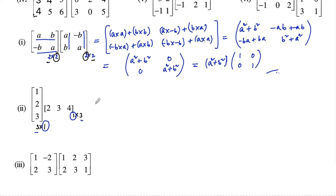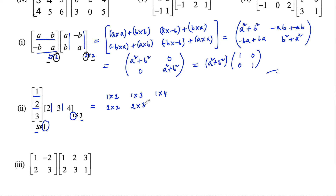We will get 9 elements. First row with first column: 1 into 2. First row with second column: 1 into 3. First row with third column: 1 into 4. Second row with first column: 2 into 2. Second row with second column: 2 into 3. Second row with third column: 2 into 4. Third row with first column: 3 into 2. Third row with second column: 3 into 3. Third row with third column: 3 into 4.